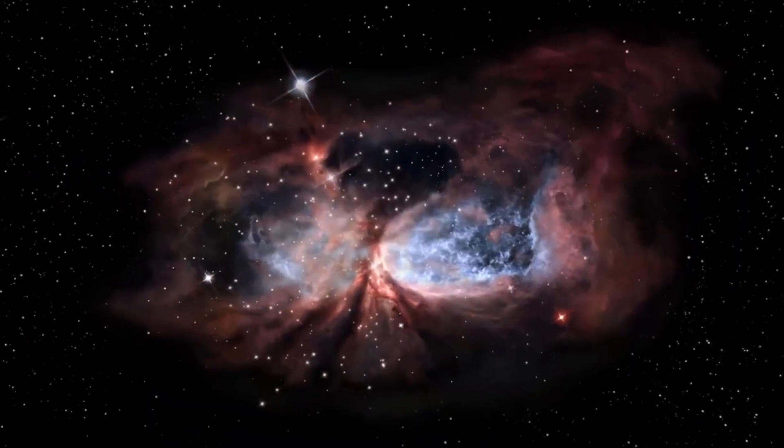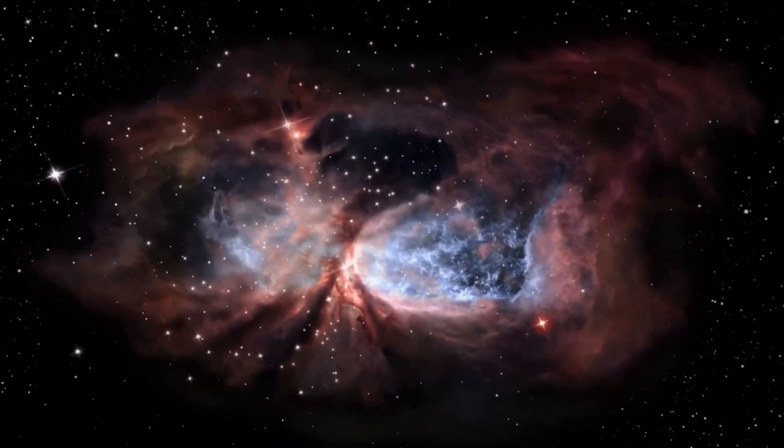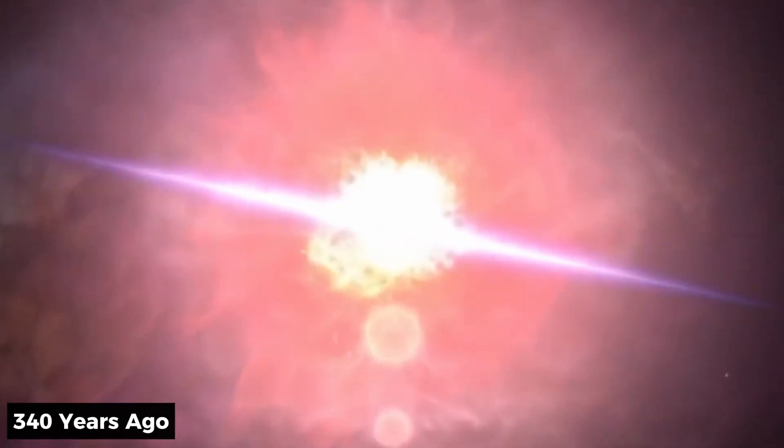Cassiopeia A, also known as Cass A, is a supernova remnant, or in easier terms, the leftovers of a massive stellar explosion that happened about 340 years ago.